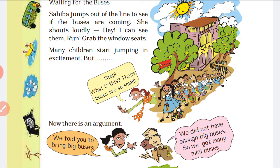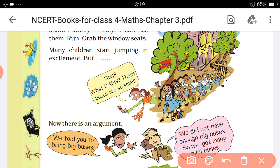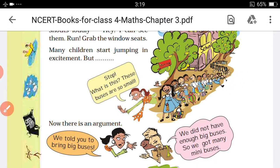Shahiba jumps out of the line when she sees the buses coming. The children will be in line in the same way. Shahiba jumps out of the line when she sees the buses coming, and they jump into the bus and shout. The line will move. You can see this in the picture — this is the girl.